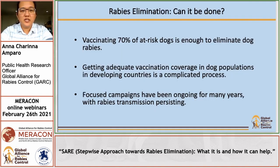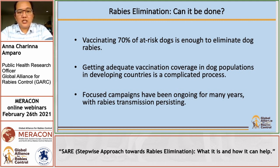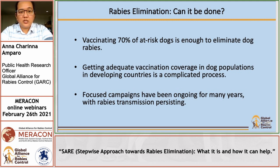We all know that vaccinating at least 70% of at-risk dogs is enough to eliminate dog rabies. However, we also know that this is not a straightforward task. Achieving the target particularly in developing countries is a complicated process. There are areas where focused campaigns have been ongoing for many years yet rabies transmission still persists.